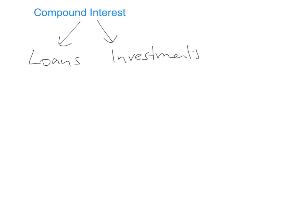When dealing with loans we talk about annual percentage rate, written in short as APR. When talking about investments, the interest is known as annual equivalent rate, and that's AER. I like to remember APR by thinking of the P as 'pay' — it's the interest you're paying to the bank on a loan. For AER, I think of the E as 'earn' — it's the extra interest I'm earning in my bank account.